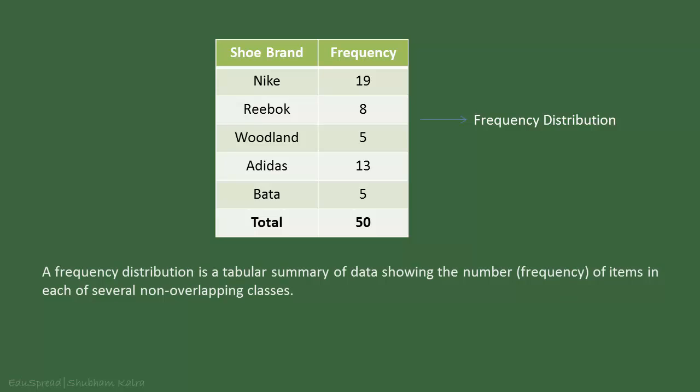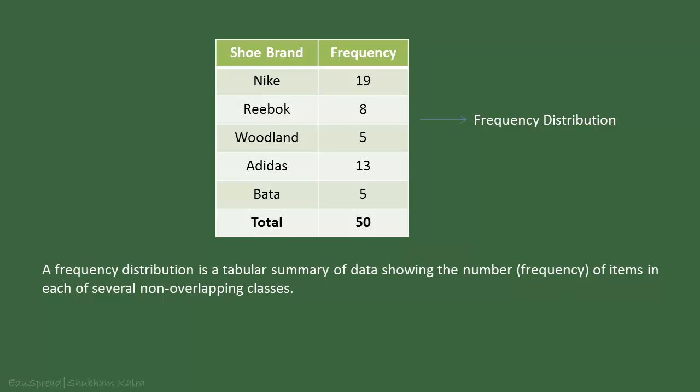To state it formally, a frequency distribution is a tabular summary of data showing the number of items in each of several non-overlapping classes. In our example, the five shoe brands that we have taken are the five classes.